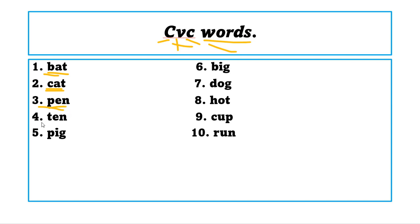Number 4, ten. So a number, 1 2 3 4 5 6 7 8 9 10, that is a number. And number 5, pig. The meat of pig we call it pork, the animal we call it pig. Number 6, big. So taller than you, longer than you, higher than you, wider than you, so that is big.